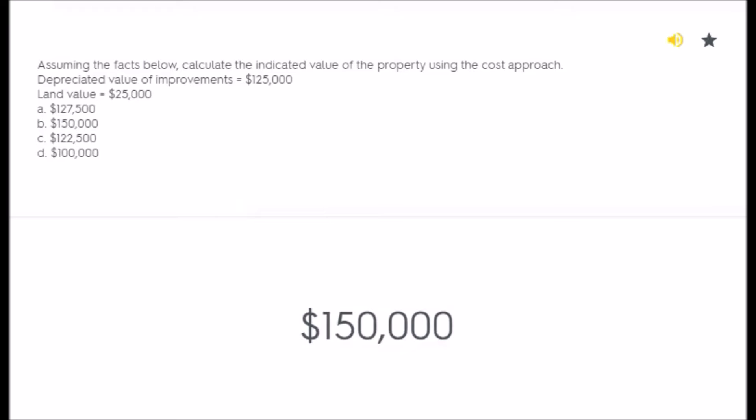Assuming the facts below, calculate the indicated value of the property using the cost approach. Depreciated value of improvements equals $125,000; land value equals $25,000. A) $127,500, B) $150,000, C) $122,500, D) $100,000. Answer: $150,000.